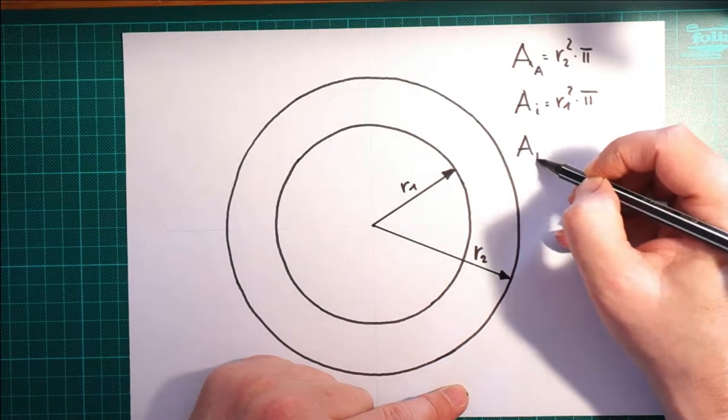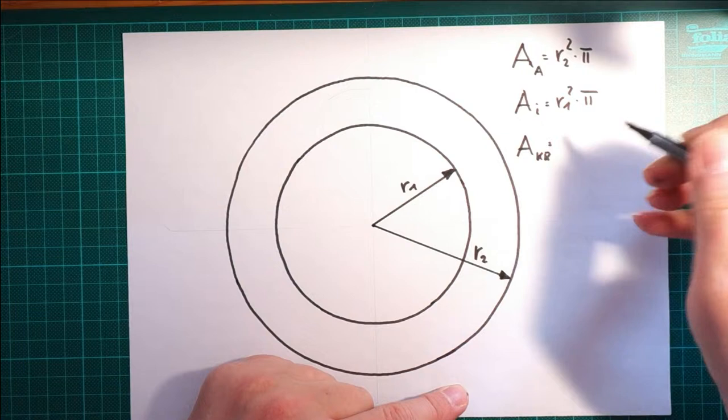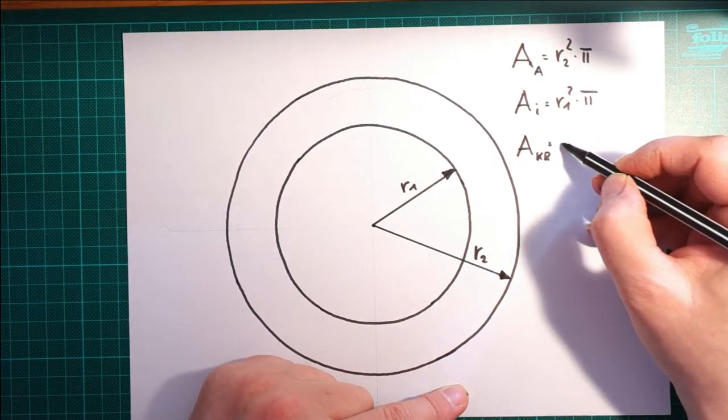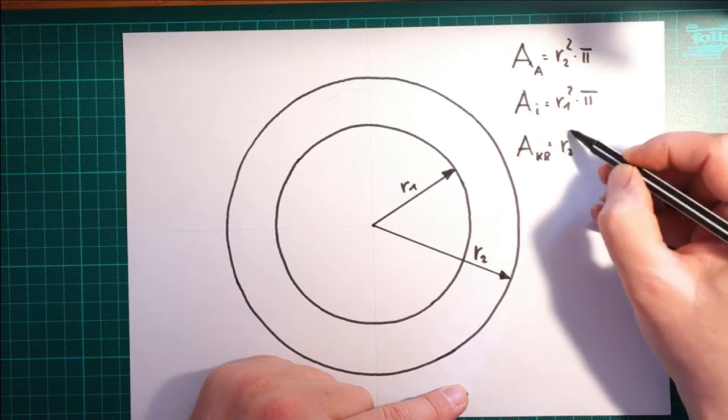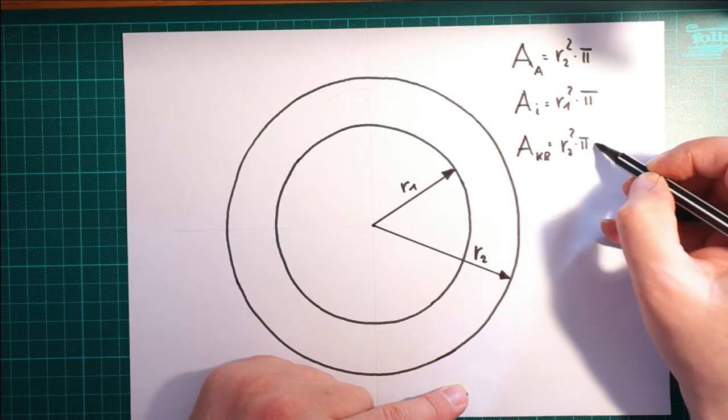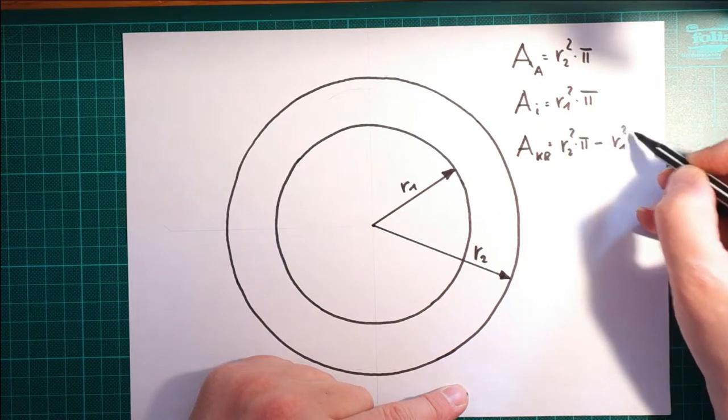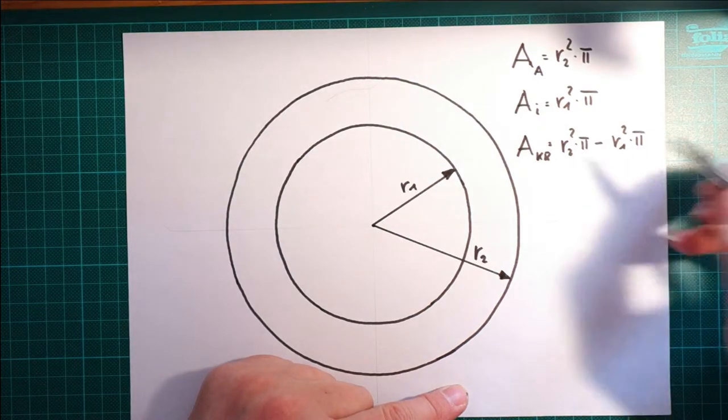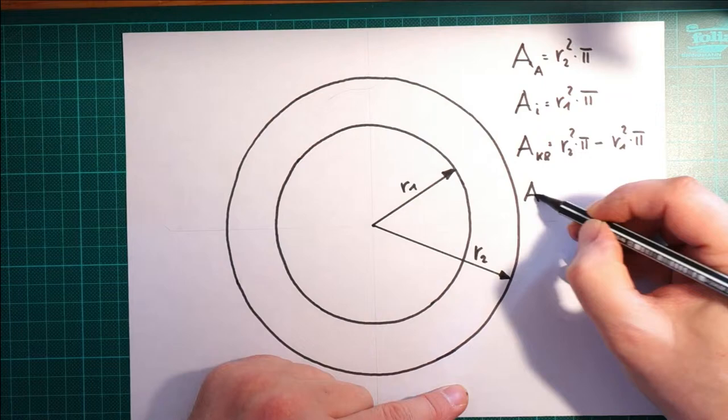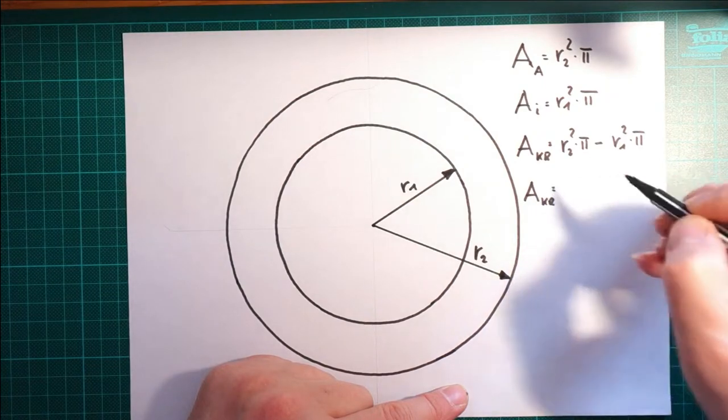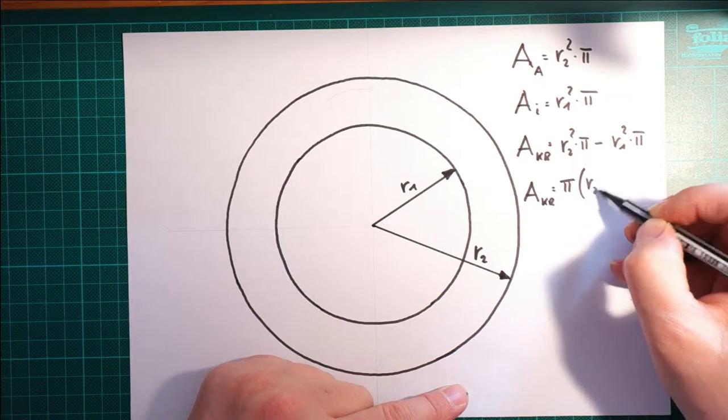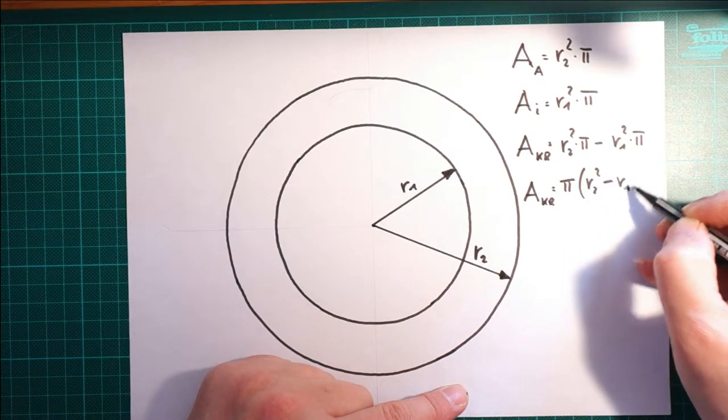Und die Fläche vom Kreisring ist damit äußerer Kreis minus innerer Kreis. Wer drauf aufgepasst hat, der sieht sofort, da kann ich was herausheben. Die Fläche vom Kreisring ist also Pi mal R2² minus R1².